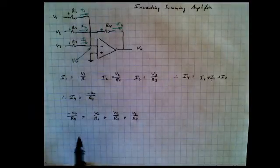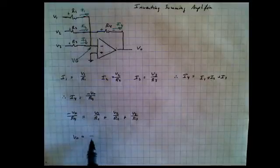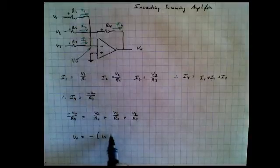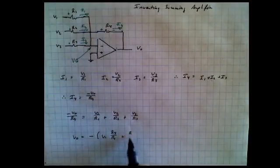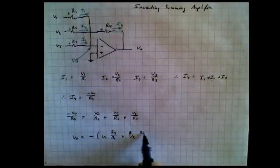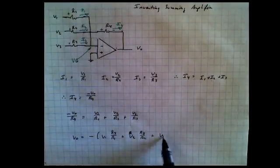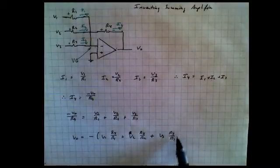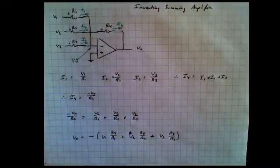And therefore, we can cross multiply and we can say that Vout is equal to, which is strictly minus in front of all of these things, V1 times R4 over R1, plus V2 times R4 over R2, plus V3 times R4 over R3.